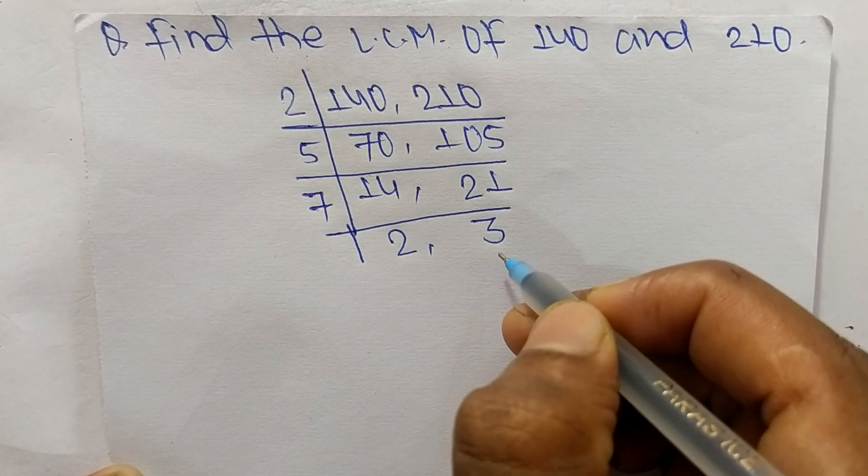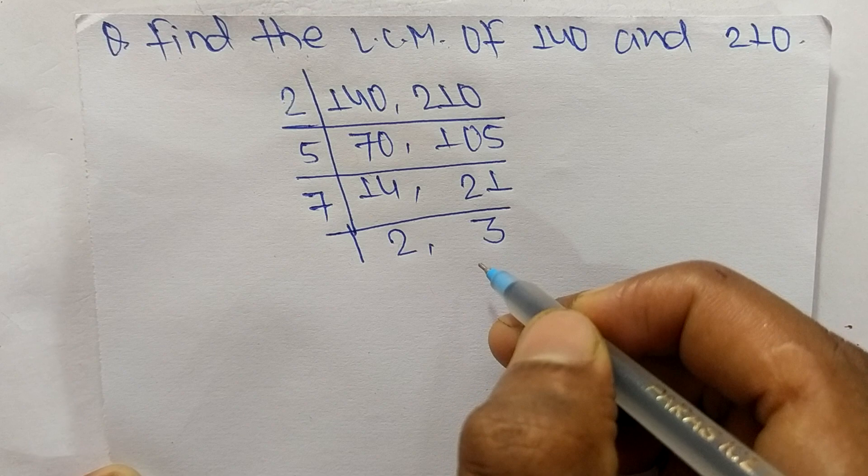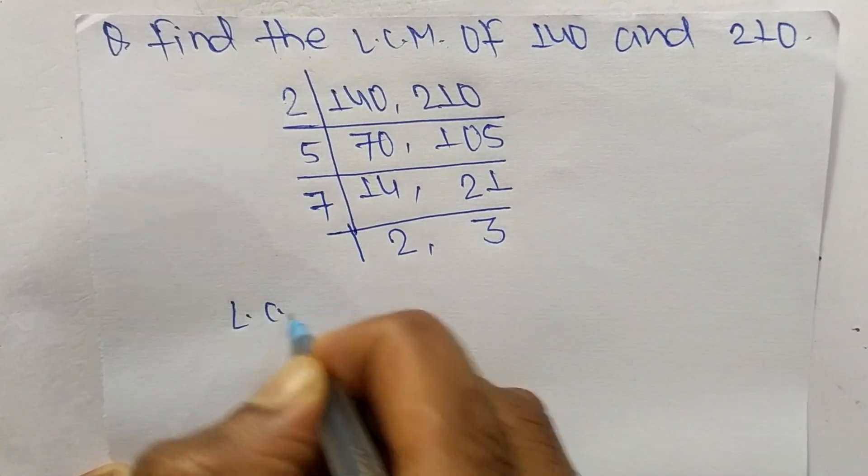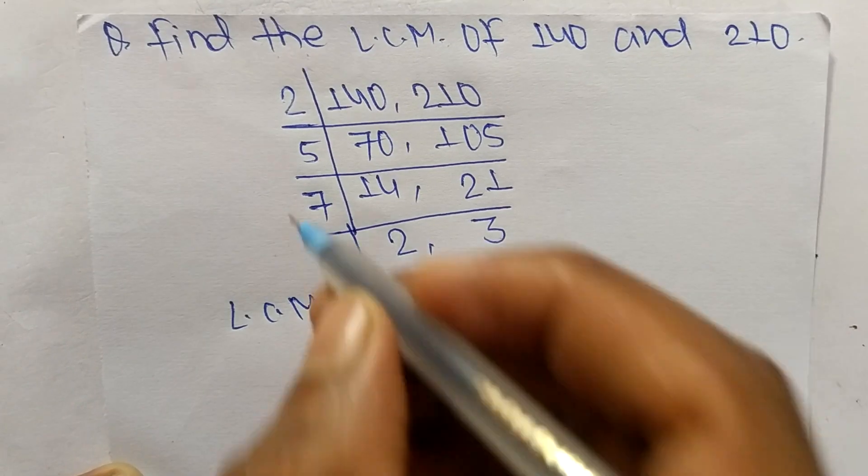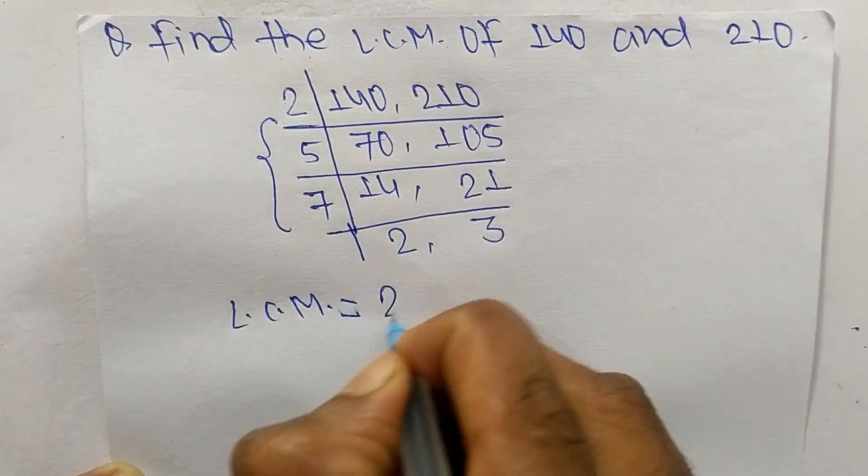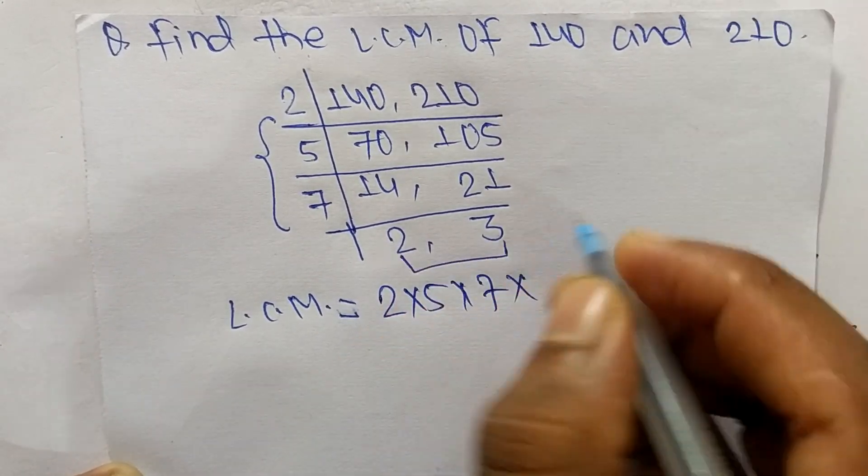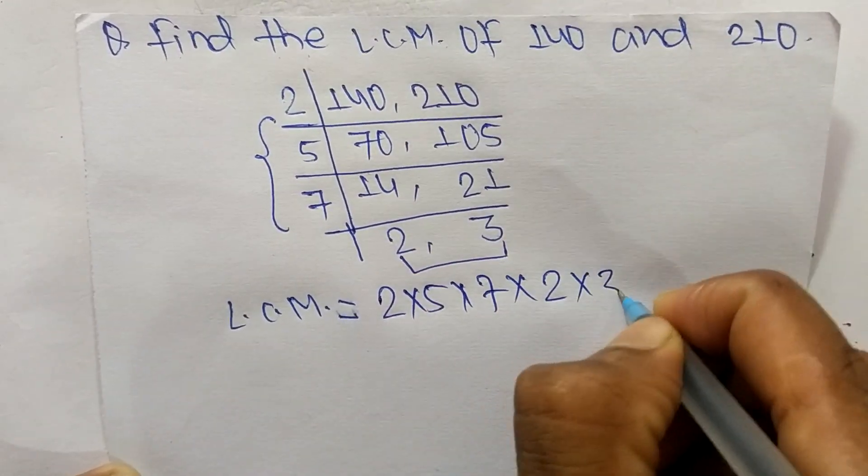last we have 2 and 3 which are not exactly divisible by the same number, so the LCM is equal to, from this part, it is 2 times 5 times 7, and from this part we have 2 and 3.